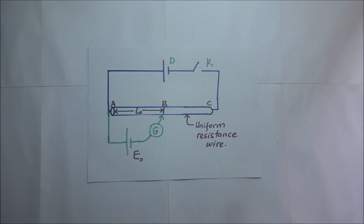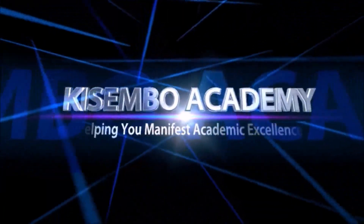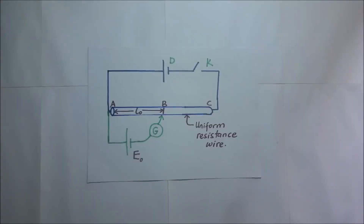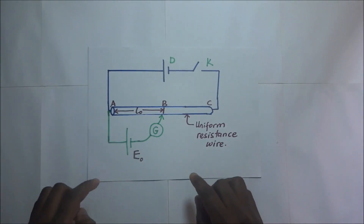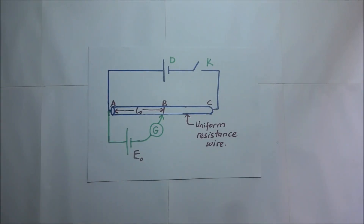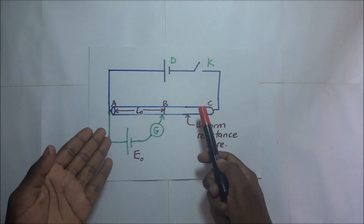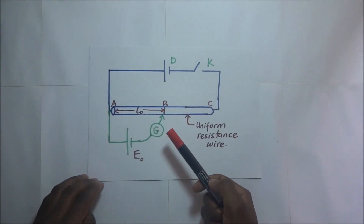How to standardize a potentiometer. Standardizing a potentiometer is simply the process of obtaining the PD per unit length of a potentiometer wire. This is how we set up the experiment.